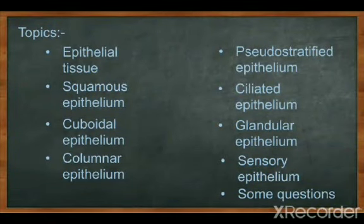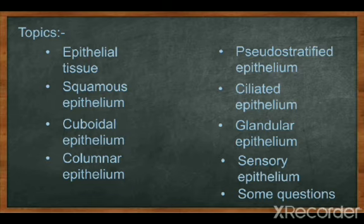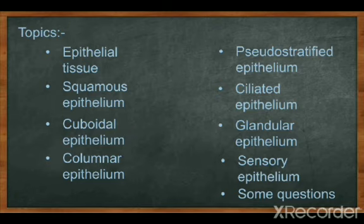The topics we are going to cover are: epithelial tissue — its types, functions, properties, location, and main functions. The different types of epithelial tissue are: squamous, cuboidal, columnar, pseudostratified, ciliated, glandular, and sensory. After sensory, some questions are related to this epithelial tissue and their types.